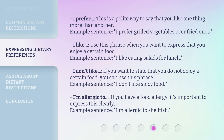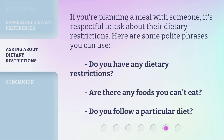'I'm allergic to' — if you have a food allergy, it's important to express this clearly. Example sentence: I'm allergic to shellfish. If you're planning a meal with someone, it's respectful to ask about their dietary restrictions. Here are some polite phrases: Do you have any dietary restrictions? Are there any foods you can't eat? Do you follow a particular diet?